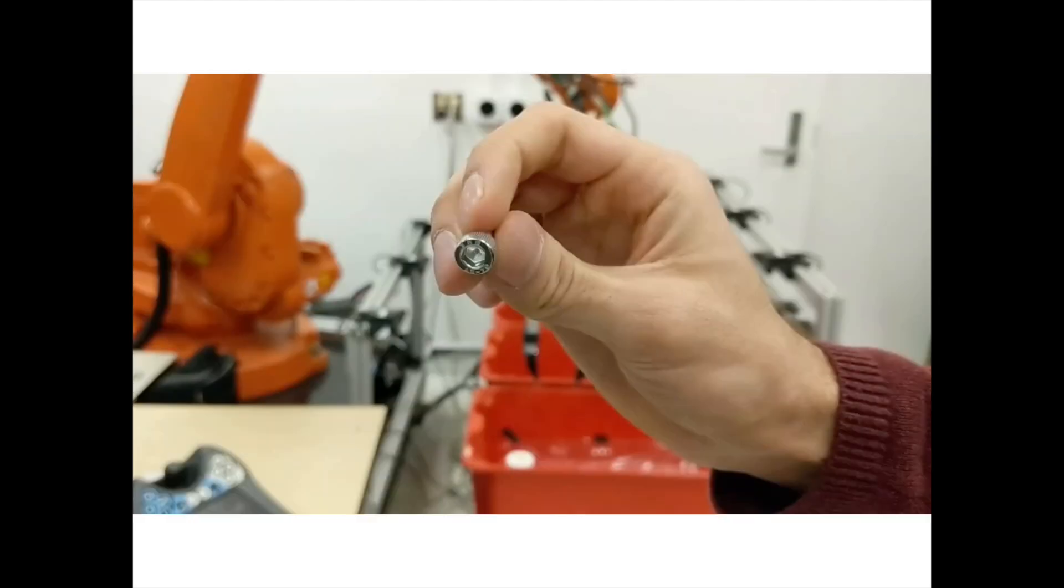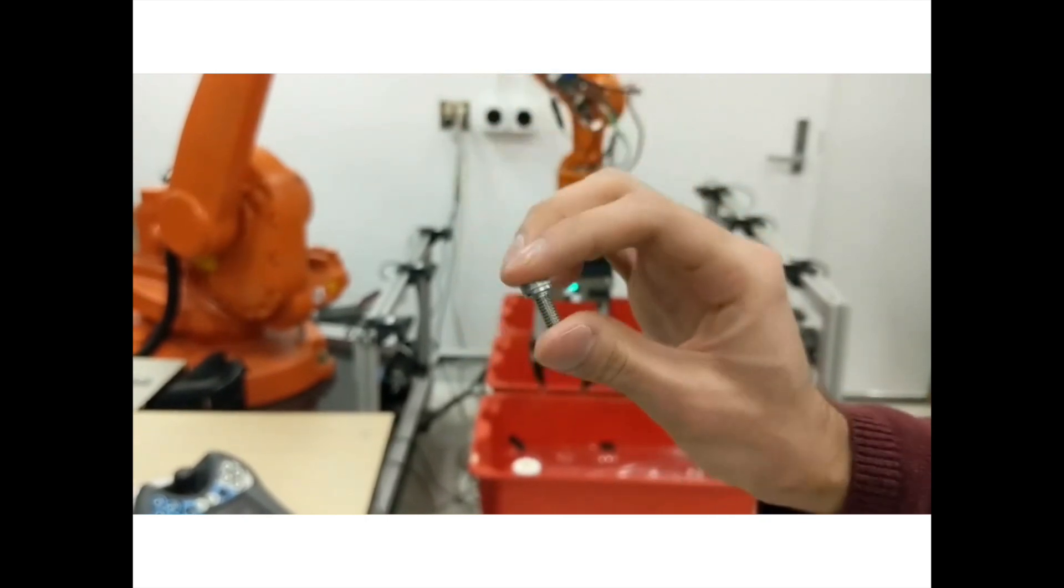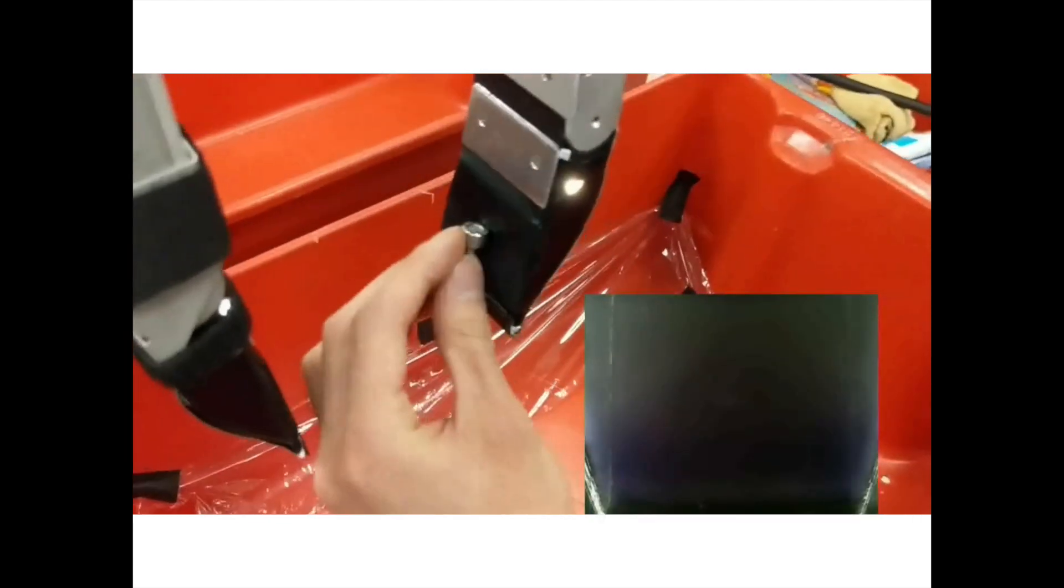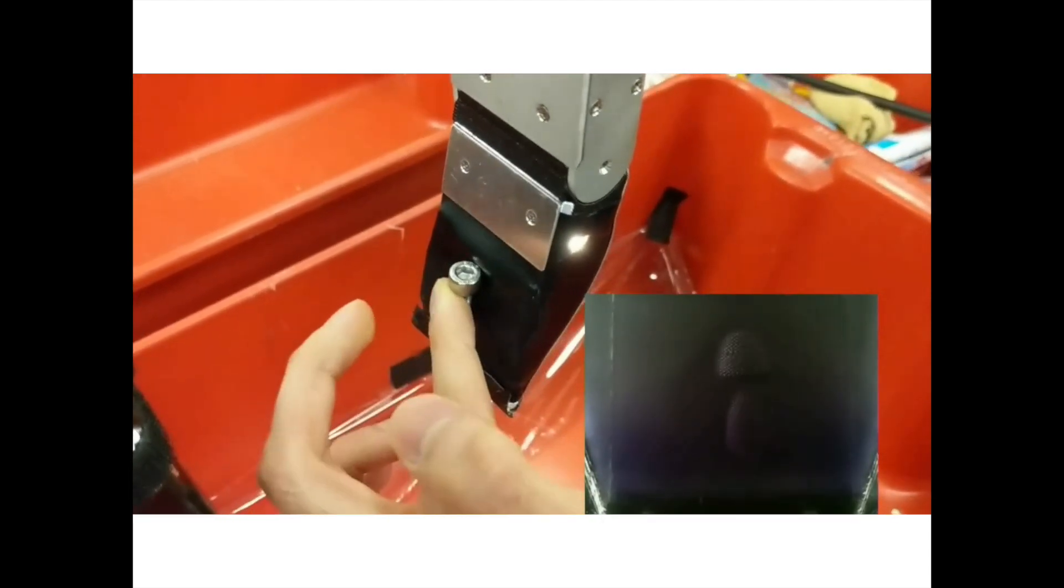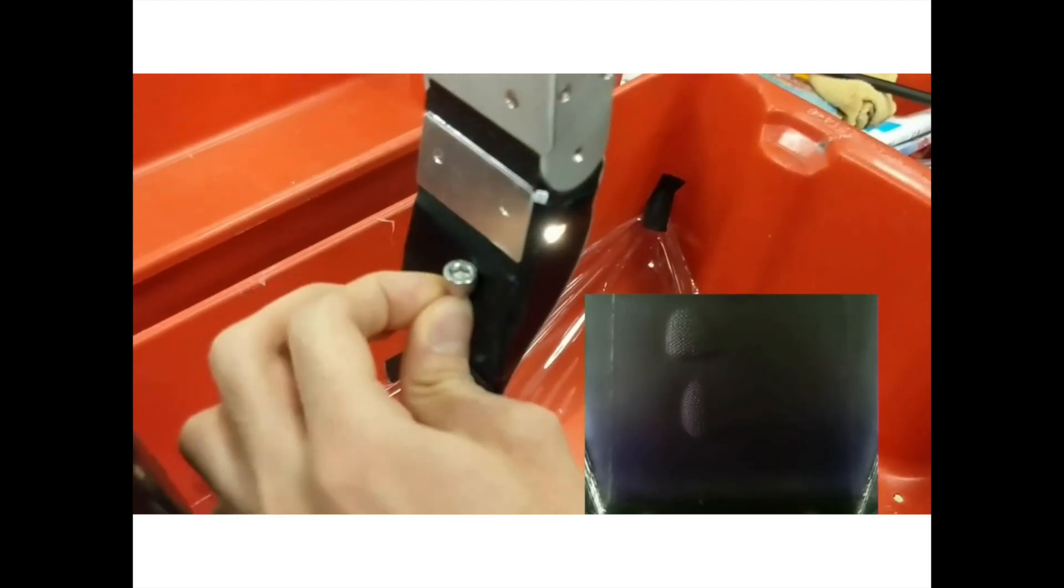The tactile sensor used, named Gelslim, is an optical tactile sensor that renders high-resolution images of the contact surface geometry. When an object is pressed against the Gelslim, a camera located within the finger of the gripper captures the deformation of the sensor's membrane.